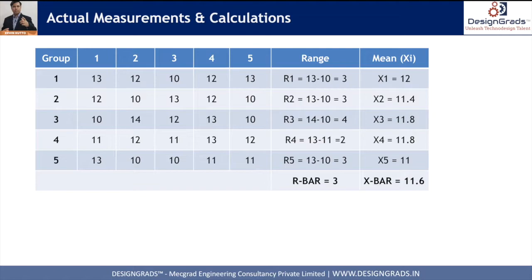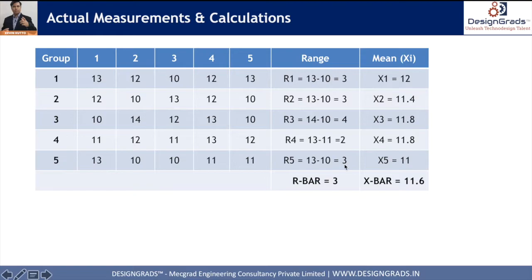For each group we calculate the range by finding the largest minus the smallest dimension. For example, the largest is 13 and smallest is 10, so the range is 3. Similarly, the mean of each group is calculated by summing all values and dividing by 5 — for the first group that gives a mean of 12. We then calculate R-bar as the average of all group ranges, and X-bar as the average of all group means.